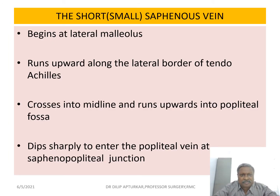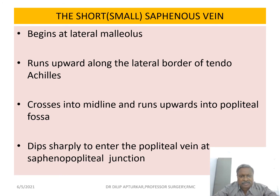The short saphenous vein begins at the lateral malleolus. It runs upward along the lateral border of the tendo achilles, crosses into the midline, and runs upward into the popliteal fossa, where it dips sharply to enter the popliteal vein at the saphenopopliteal junction. This junction is usually in the lower part of the popliteal fossa, but its site varies in many persons — it is not constant. Sometimes the short saphenous vein extends further cranially; this cranial extension is called the Giacomini vein, and it can join the long saphenous vein.